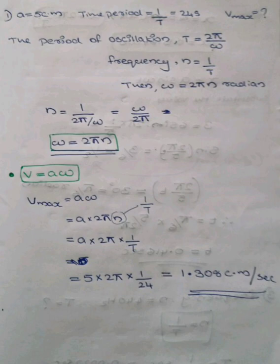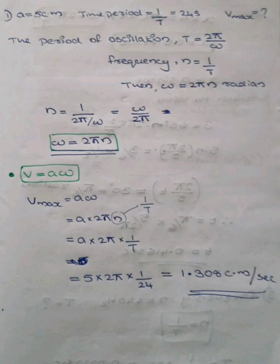N equals 1 by T. Substituting omega into the velocity equation: V_max equals A times ω equals A times 2π times (1/T). Therefore, V_max equals 5 times 2π times (1/24). The value is approximately 1.308 cm per second. The unit of maximum velocity is cm per second.